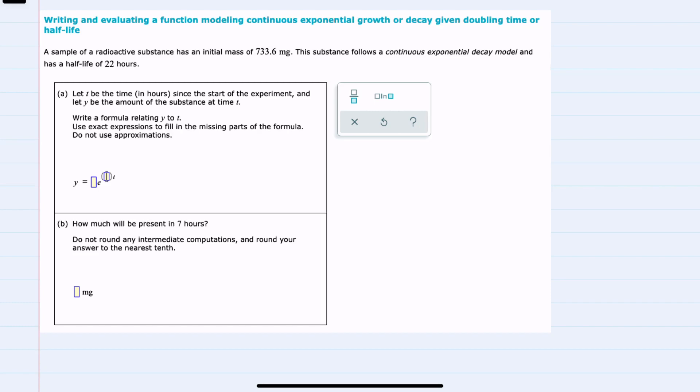In this video, I'll be helping you with the Alex problem type called writing and evaluating a function modeling continuous exponential growth or decay given doubling time or half-life. In the example here, we have a radioactive substance with an initial mass, and we're told that it's continuous exponential decay.